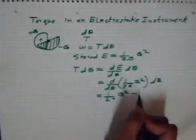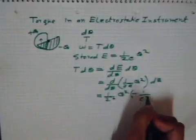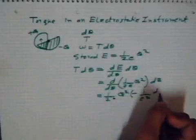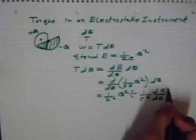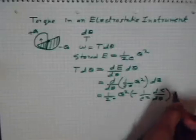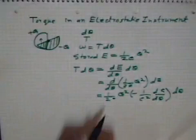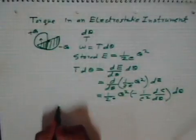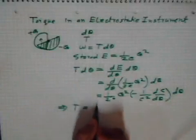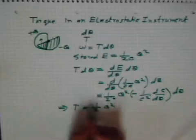Then d/dθ of 1/C, which is equal to minus 1/C² dC/dθ times dθ. So if I now cancel dθ out, this implies torque is equal to half Q² times minus...